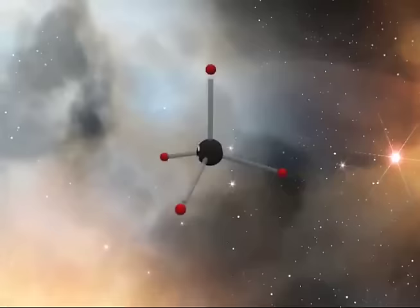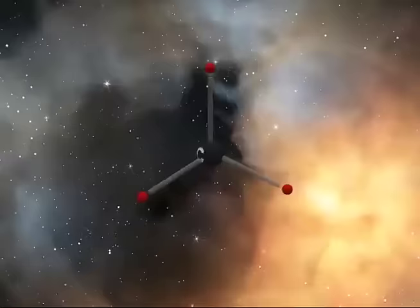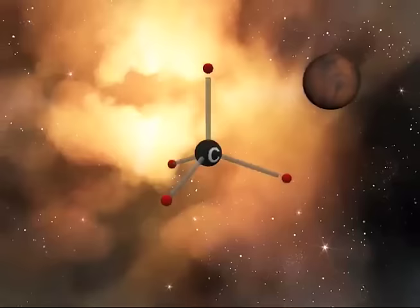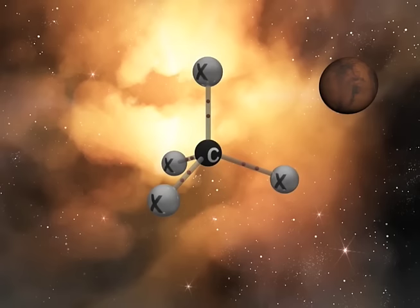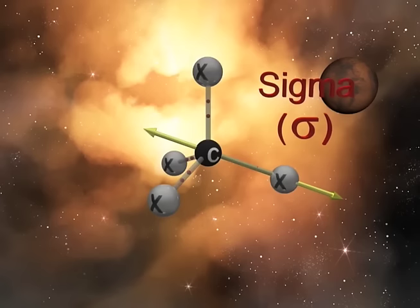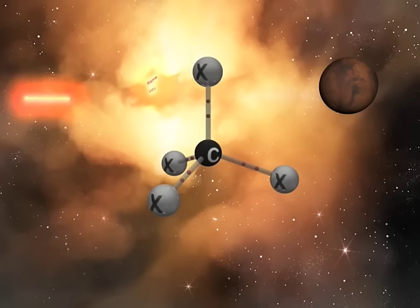Each of the four sp3 hybrid orbitals contains one electron capable of forming a covalent bond. The sp3 hybridized carbon is now capable of forming four covalent bonds. X represents any atom with a valence electron capable of forming a covalent bond. Because the electron density is symmetrically located about an imaginary line that runs through the two adjacent nuclei, we call these bonds sigma bonds.